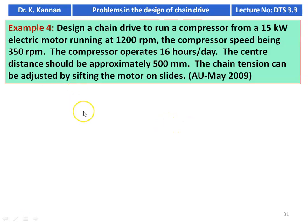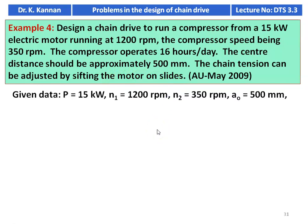This is example number 4.4 from a university question paper, May 2009. Design a chain drive to run a compressor from a 15 kilowatt electric motor running at 1200 rpm, with compressor speed being 350 rpm. The compressor operates 16 hours per day. The center distance should be approximately 500 millimeter. The chain tension can be adjusted by shifting the motor on slides. Given data: power is 15 kilowatt, pinion speed 1200 rpm, compressor speed 350 rpm, center distance approximately 500 millimeter.